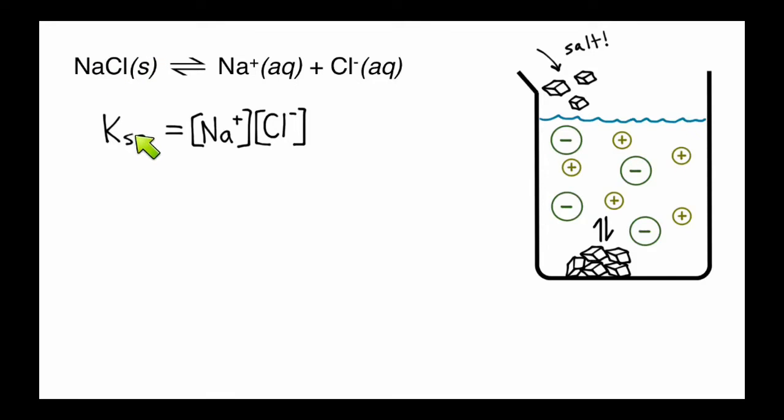We always write products over reactants. So we've got two products here, sodium ions and chloride ions, and they both have a coefficient of one. And so our exponents here are one and one. It's not over anything because we just had solid sodium chloride as our reactant.